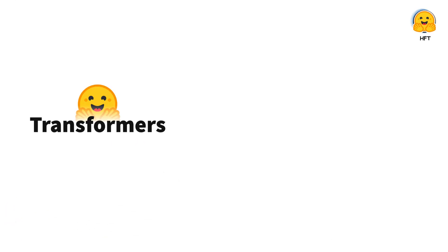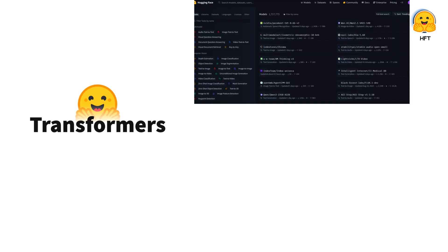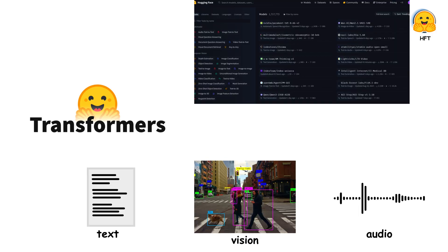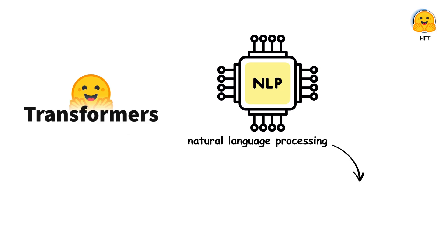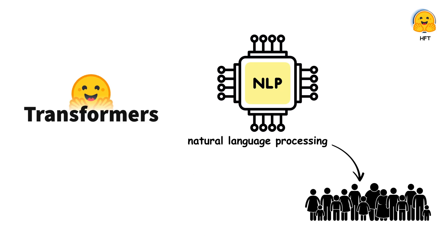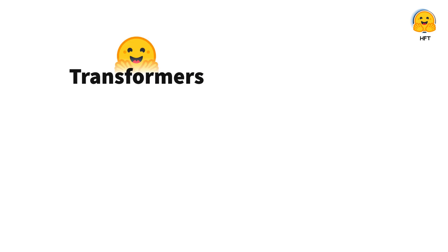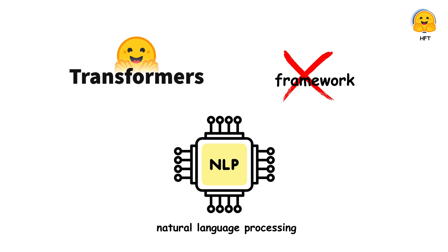Hugging Face Transformers provides thousands of pre-trained models to perform tasks on different modalities such as text, vision, and audio. It's designed to make state-of-the-art natural language processing accessible to everyone. It is not a traditional machine learning framework, but rather a specialized library focused on transformer models that have revolutionized NLP.